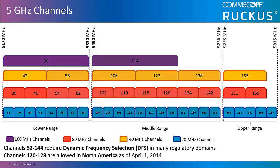The complexity is sometimes due to channel and power restrictions placed upon us by various regulatory domains. For example, channels 52 through 144 are considered to be Dynamic Frequency Selection (DFS) channels in most of the world. DFS requires any radios using this space to scan for other designated uses of these channels and move away if they are detected. Typically, enterprise deployments will use 40 megahertz wide channels, with high-density areas still being restricted to 20 megahertz wide channels.